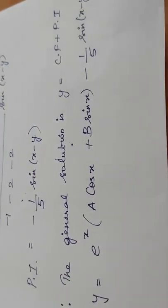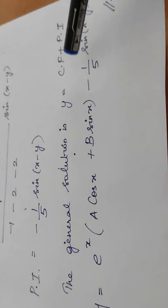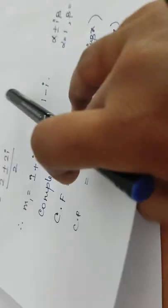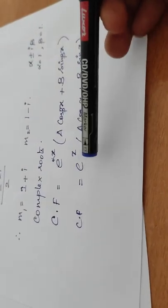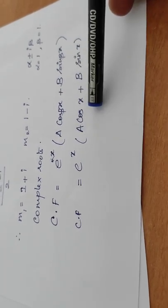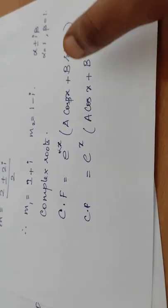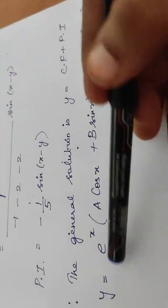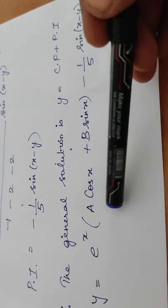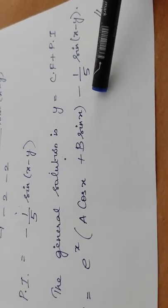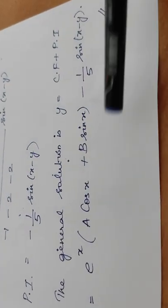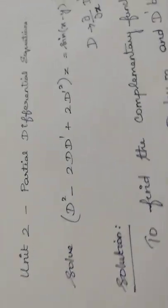The general solution is y = complementary function + particular integral. The complementary function is e^x (a cos x + b sin x), and the particular integral is −(1/5) sin(x − y). So the general solution is y = e^x(a cos x + b sin x) − (1/5) sin(x − y). This is the general solution for the given PDE.